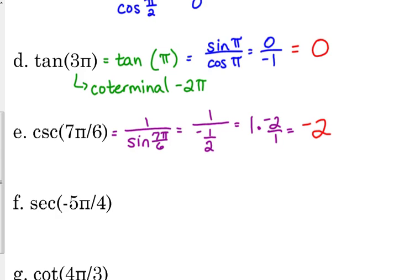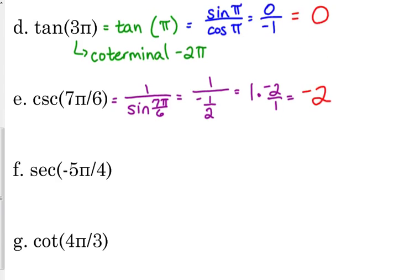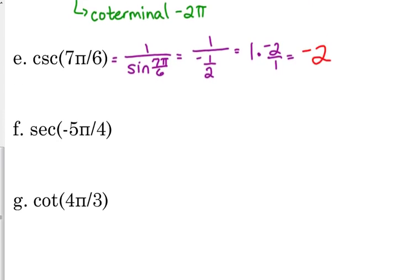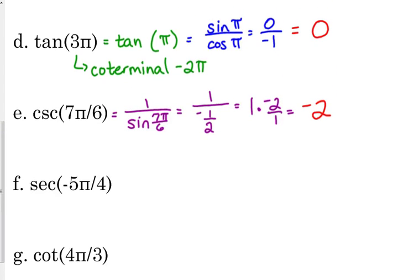Now, sine and cosine can never be bigger than 1 or negative 1. That's as big as it'll get for sine and cosine. But cosecant and secant are their reciprocals. So if you flip over a tiny number, you end up with a bigger number. So cosecant and secant can have values greater than 1 and negative 1, just as the sine of 7π over 6. We just came straight off the unit circle. I looked at 7π over 6 and got its y coordinate.